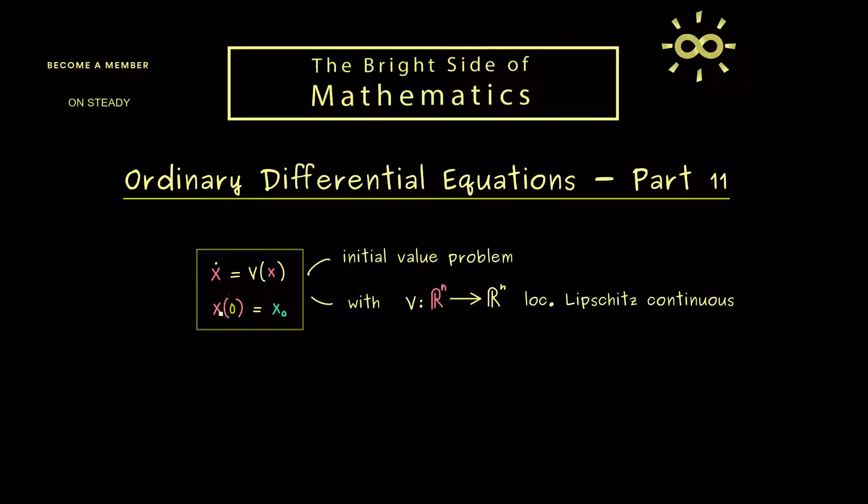And in the last video, we discussed this initial value problem for a function v that is locally Lipschitz continuous. And there we found out that we have in fact a uniqueness property for the solution of this initial value problem. In other words, there is at most one solution x that satisfies both equations here. And now of course it would be nice to also show the existence of this solution. So the question is, how can we find solutions for this initial value problem?